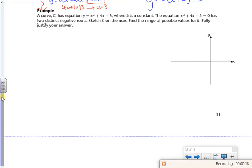So what does it tell us then? It says a curve C has an equation y equals x squared plus 4x plus k, where k is a constant. The equation has two distinct negative roots. Sketch C on the axes. So if you've got two distinct negative roots and it's a u-shape because it's x squared, I know it looks something like that. I know that would be k there. So it says find the range of possible values for k, fully justify your answer.